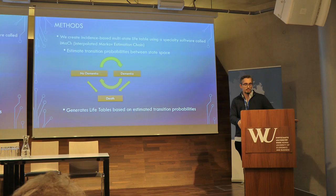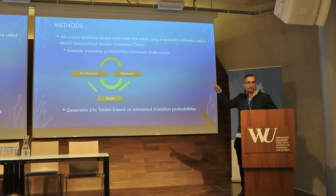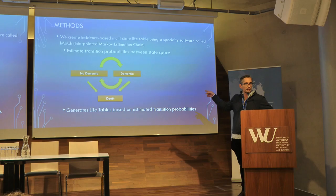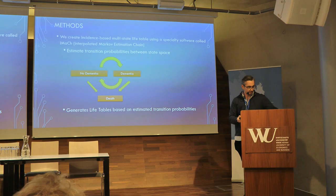For methods, we use incidence-based multi-state life tables. We generate transition probabilities between different states based on the covariates — primarily child adversity and education. You can go from non-dementia to dementia, and there are actually some back-flows, consistent with other studies, where people can be indicated as having dementia, then revert to not demented, and then return to dementia again. And then of course we have the absorbing state, which is death.